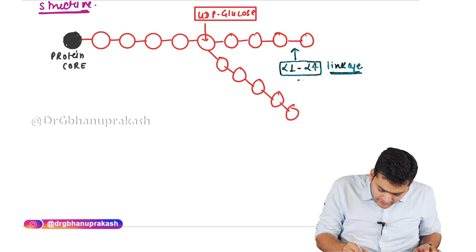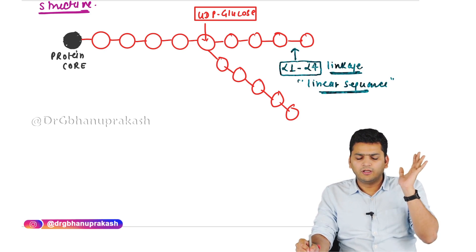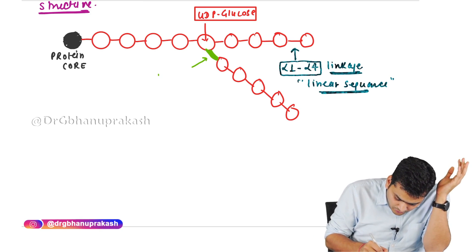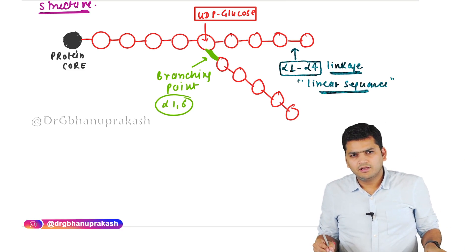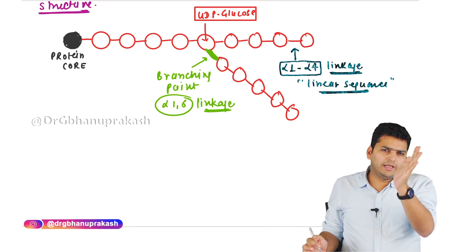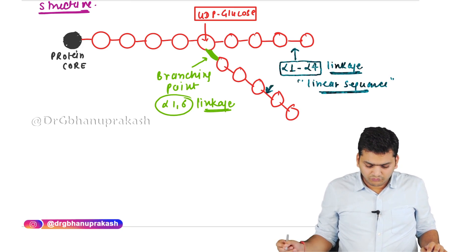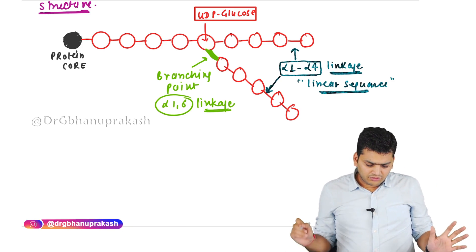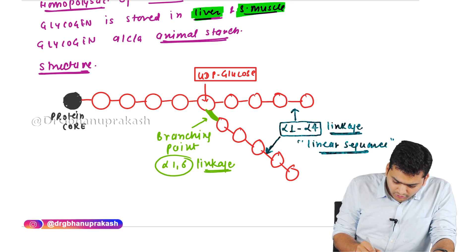Only at the branching point is the bond alpha 1,6. So in glycogen: linear sequence = alpha 1,4; branching point only = alpha 1,6. Almost 60,000 molecules of glucose are stored in one glycogen molecule. This glycogen is stored in the liver and skeletal muscle.